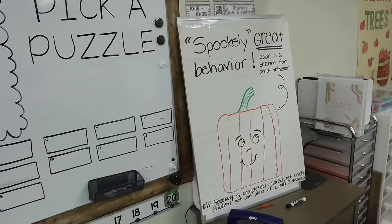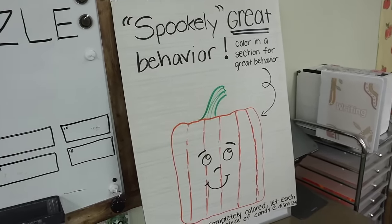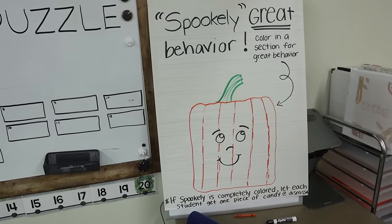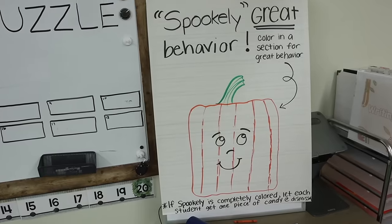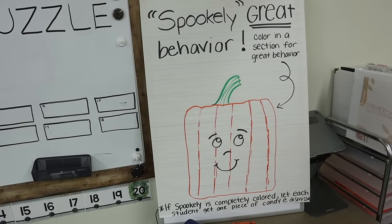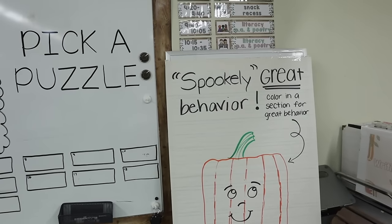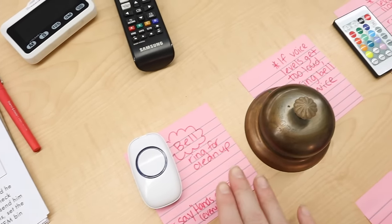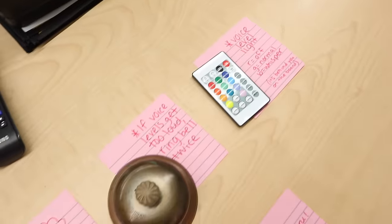Here's my little message. I wanted to do a whole class behavior chart — I saw ABCs with Miss B do this. The only difference is I made mine a Spookly version because their read aloud tomorrow is going to be Spookly the Square Pumpkin. So if they all get their pieces colored in, they will get a piece of candy at the end. I just put it on this whiteboard. I do leave my bell with the substitute in case they want to use it, and I explain how they do each of the management systems.